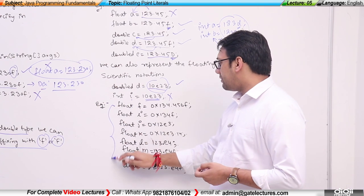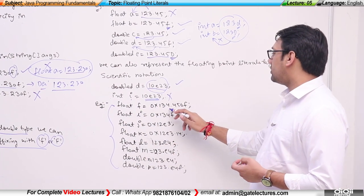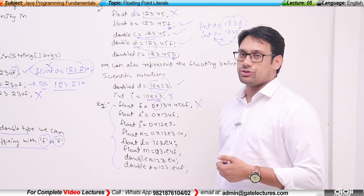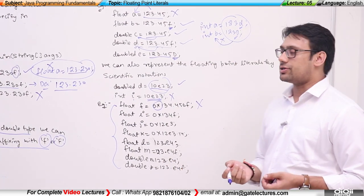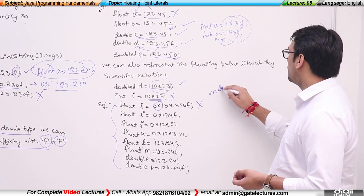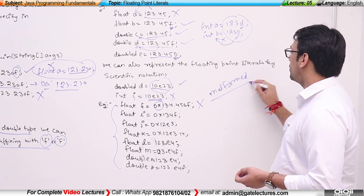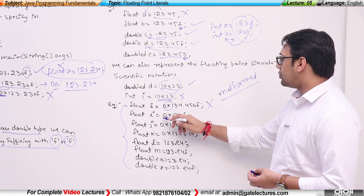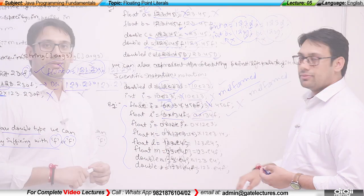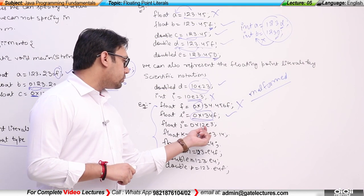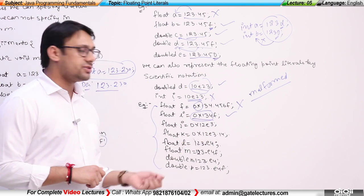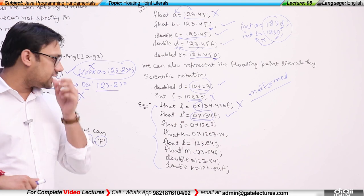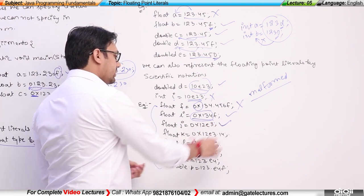If I write float f is equal to 0x134.456f, this is not correct because we cannot use 0x with a floating point literal — it will say it is a malformed expression. However, if I write float i is equal to 0x34, this is correct, because here we are using a hexadecimal integer value and you have to convert this number from hexadecimal to decimal format — this is valid.